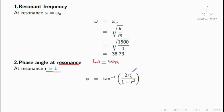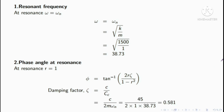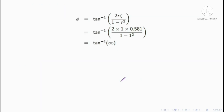To find the phase angle we need the critical damping coefficient Ct. Critical damping coefficient Ct equals 2m omega n. Substituting values gives the Ct value.